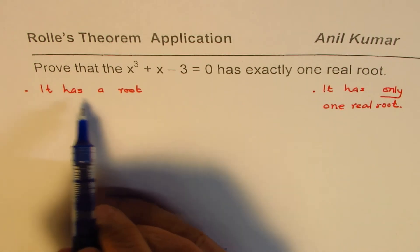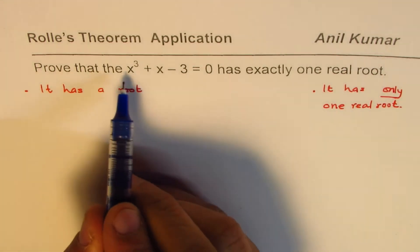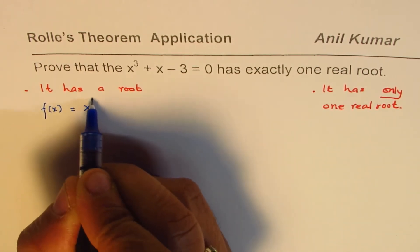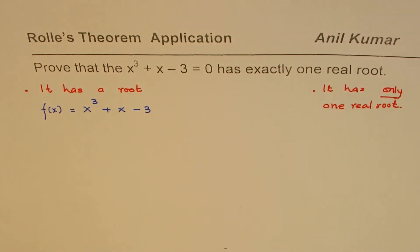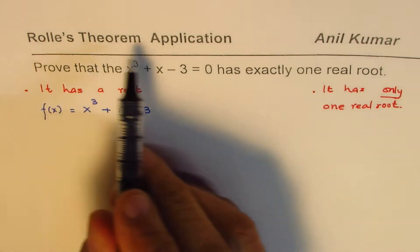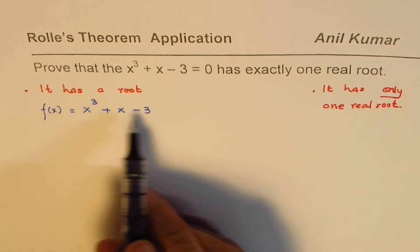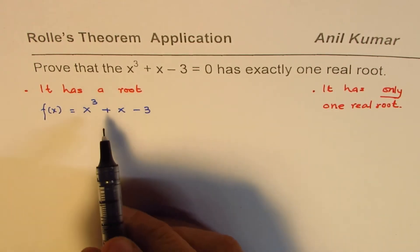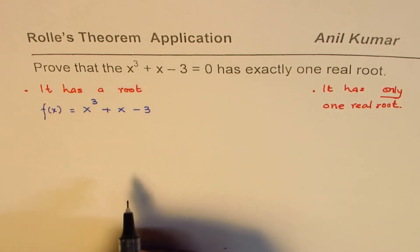Now, how do we show that it has at least one root? So what we are given here is a function f(x) = x cubed plus x minus 3. Now, as I said, it's an application of Rolle's theorem. Then let's consider the three critical things which should be satisfied by this equation. First let's prove that it has at least one root.